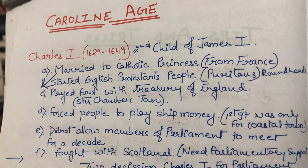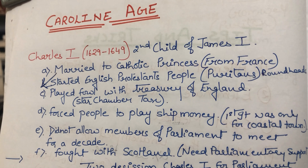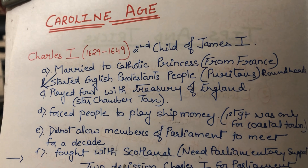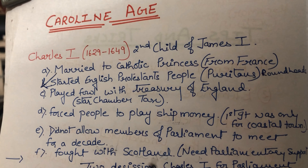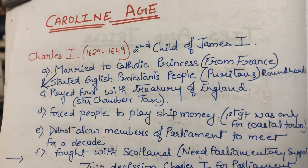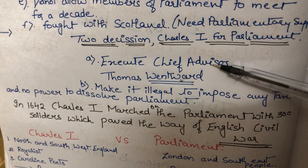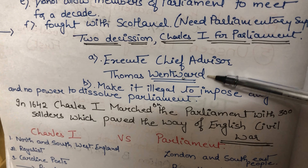Approximately 10 to 11 years, parliament did not meet because Charles I feared they could plot something against him. Then he went to fight with Scotland, and at this time he needed the support of parliament. Parliament agreed to support him but with two conditions: first, to execute his chief advisor Thomas Wentworth with the death penalty; and second, that the king would have no power to dissolve parliament. These were the two terms parliament gave Charles I.